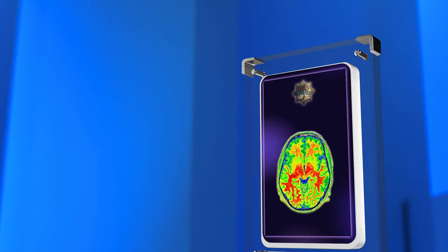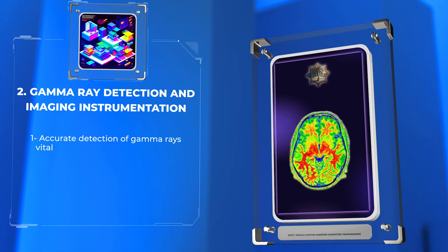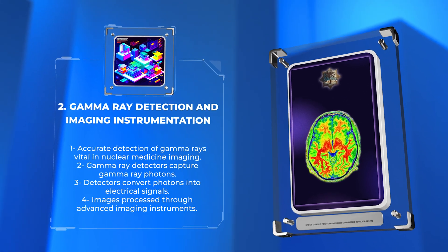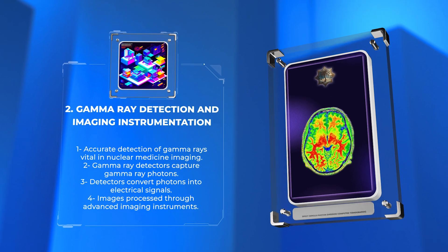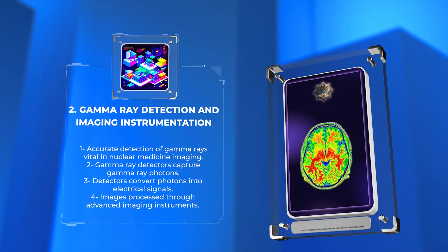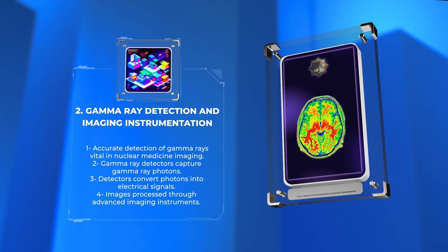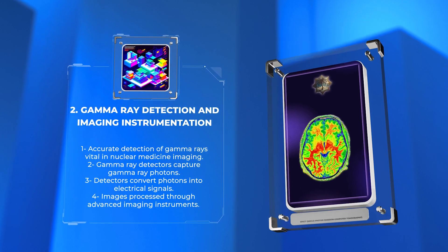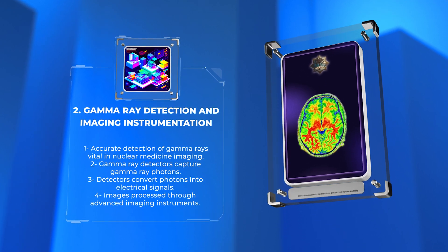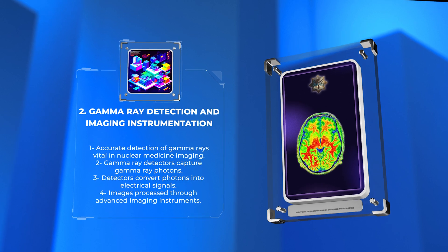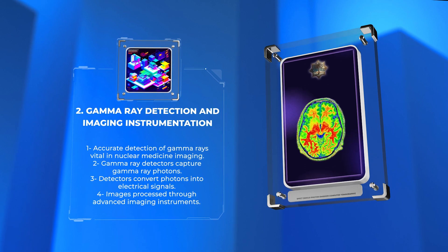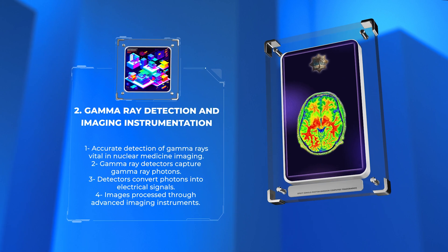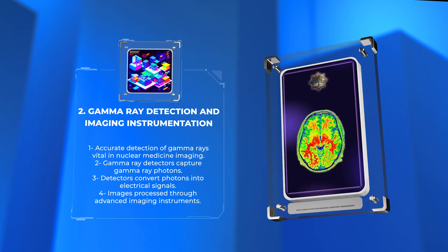Accurate detection of gamma rays is vital in nuclear medicine imaging. Gamma ray detectors, such as scintillation crystals or semiconductor detectors, are used to capture the gamma ray photons. These detectors convert the gamma photons into electrical signals, which can be further processed to create images. Advanced imaging instruments, such as gamma cameras and positron emission tomography (PET) scanners, are employed to capture and analyze gamma ray emissions from radiopharmaceuticals.